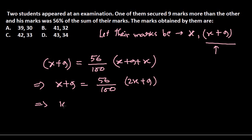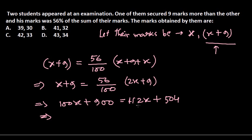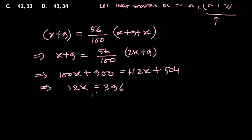Solving the equation: 100(x plus 9) equals 56 times (2x plus 9), which gives us 100x plus 900 equals 112x plus 504. Rearranging: 900 minus 504 equals 112x minus 100x, so 396 equals 12x. Therefore x equals 396 by 12, which gives x equals 33.